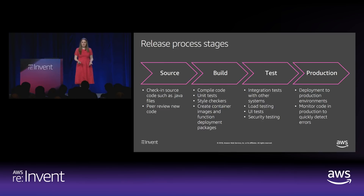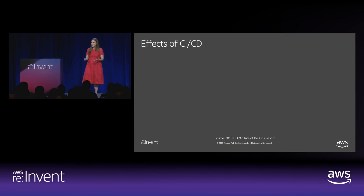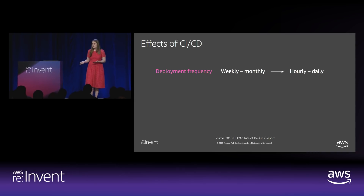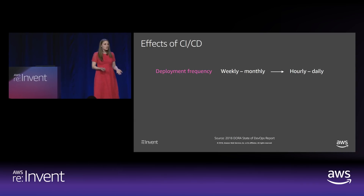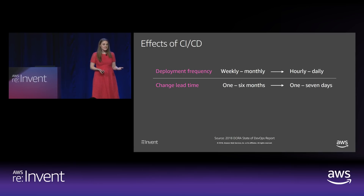After you've adopted continuous deployment and automated each of these steps, what do you get from it? I looked at this year's State of DevOps report, which surveys thousands of developers across the industry. One finding was deployment frequency: how often you deploy to production goes from weekly and monthly for teams that haven't adopted these best practices down to hourly and daily deployments. The next metric was change lead time — the time from when a developer checks in source code to when it's actually delivered to customers. This goes from one to six months — maybe two to twelve releases a year — down to one to seven days.